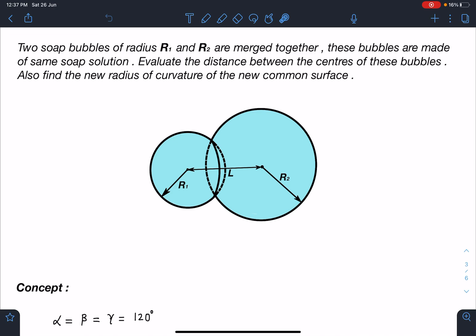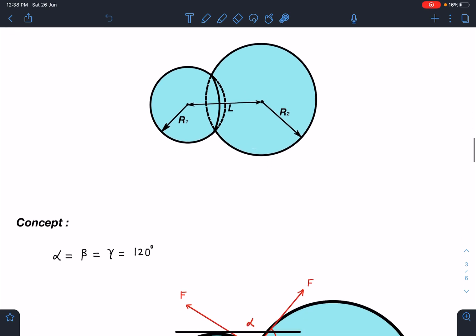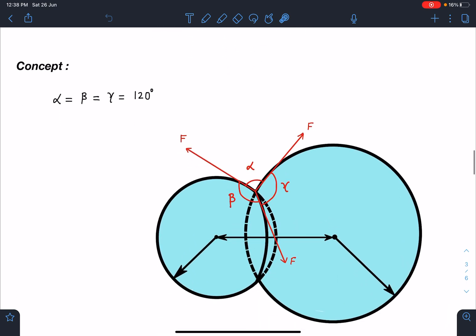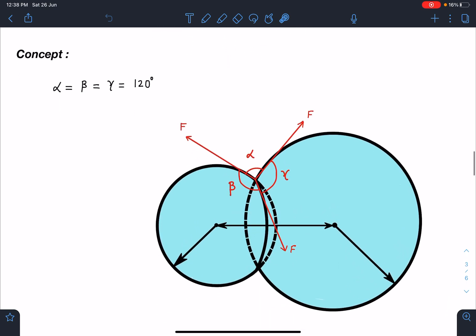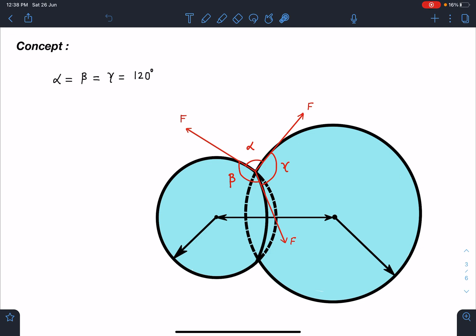Two soap bubbles of radius R1 and R2 are merged together. These bubbles are made of same soap solution. Evaluate the distance between the centers of these bubbles, also find the new radius of curvature of the new common surface. Concept-wise, once these two bubbles are merging, the common interface will be taking a new radius of curvature.